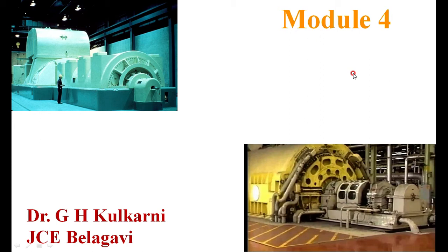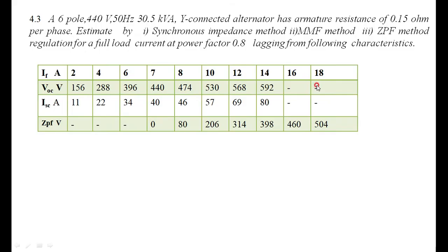In this session we will solve some numericals on the regulation of the transformer using EMF, MMF and ZPF methods. The same problem will be solved by all three methods at 0.8 power factor lagging. The problem states: a 6-pole machine, 440 volts, 50 Hz, rating of 30.5 kVA, star connected, armature resistance 0.15 ohm per phase. Find the regulation using synchronous impedance method, MMF method and ZPF method at full load for 0.8 power factor lagging.